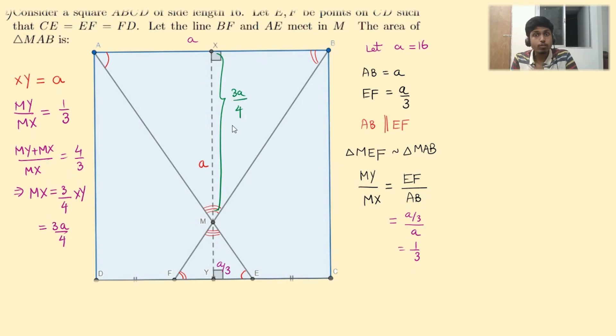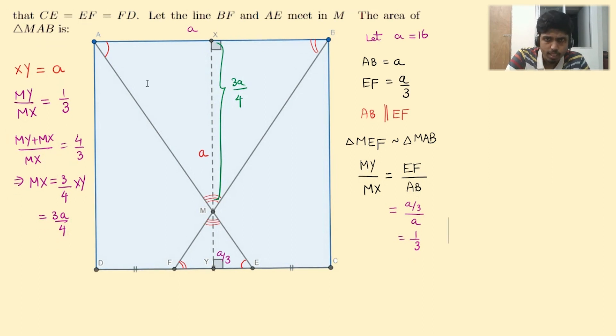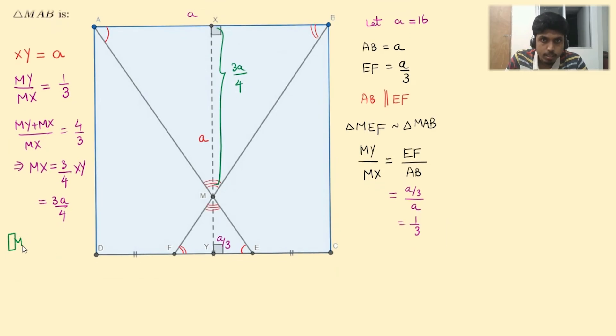We know the height of the triangle MAB and we know the base of the triangle to which this height is constructed, which is AB. Let's find the area. Area of MAB equals half into base AB into height MX. So half times AB is A and MX is 3A by 4, which is 3A squared by 8. If you substitute 16 here, you get 3 into 16 into 16 by 8, which is 6 times 16, that is 96. Hence, the area is 96 units squared.